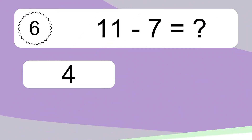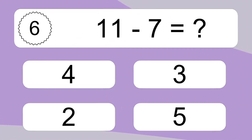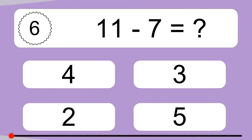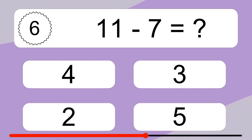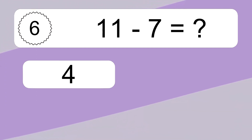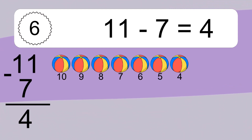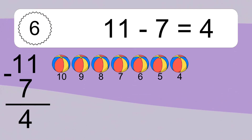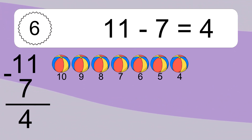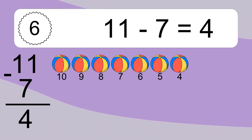11 minus 7 equals what? 11 minus 7 equals 4. Let's count it: 10, 9, 8, 7, 6, 5, 4.